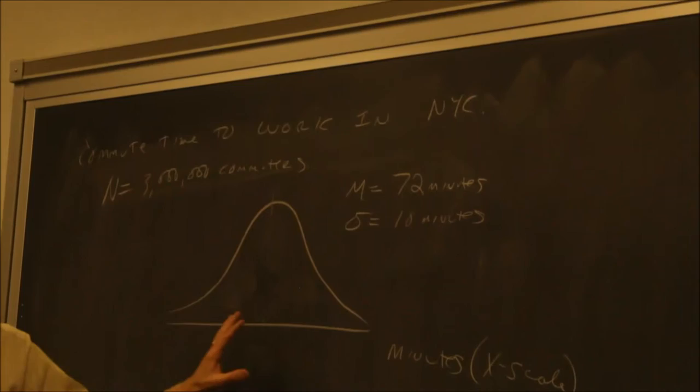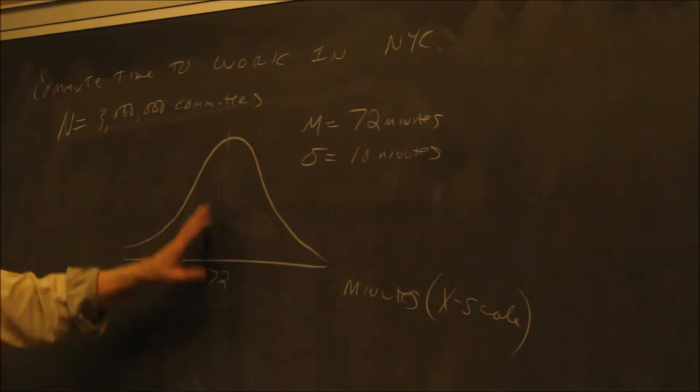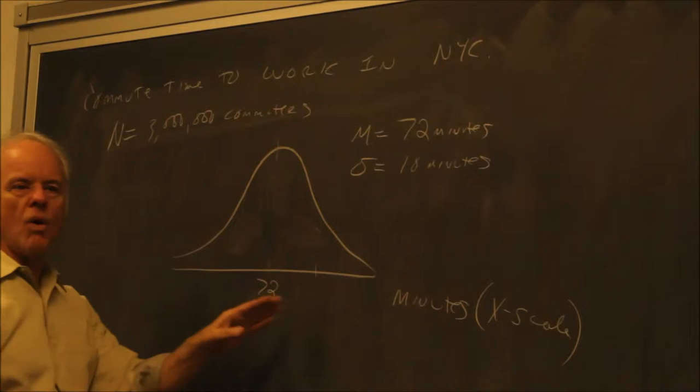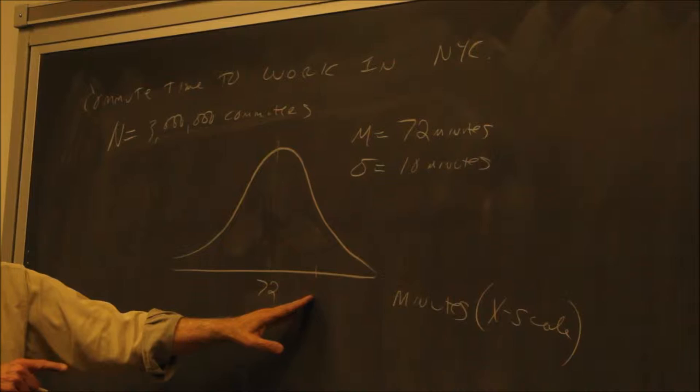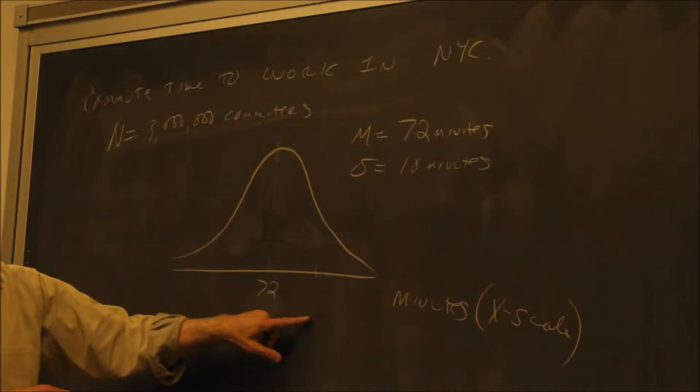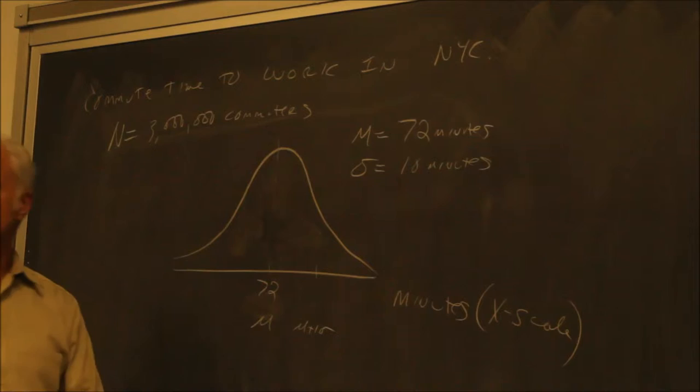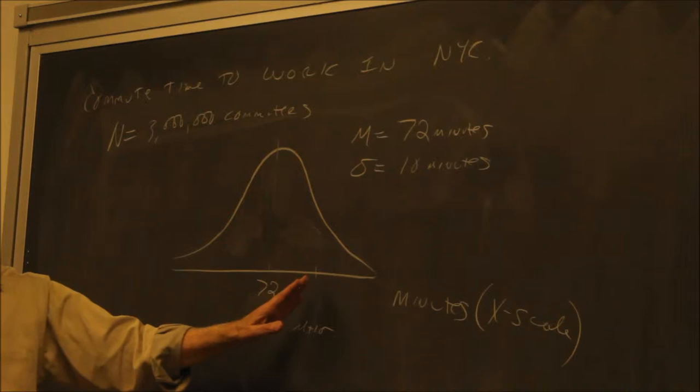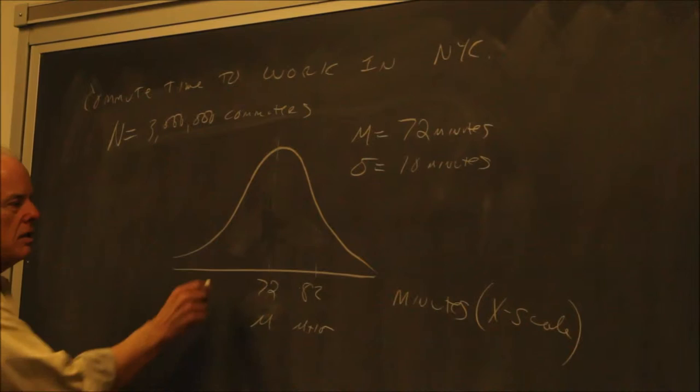If we were to look at the distribution and plot a few points on this curve, this point here would be 72 minutes because it's the mean — it's in the middle, it's also the median. If I go one standard deviation to the right, that's mu plus one sigma. With sigma equal to 10 minutes, those observations would be 82 minutes.